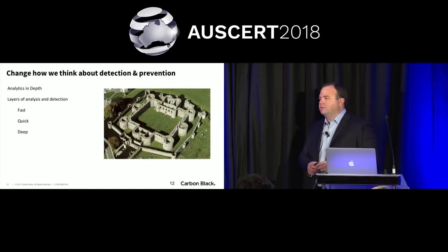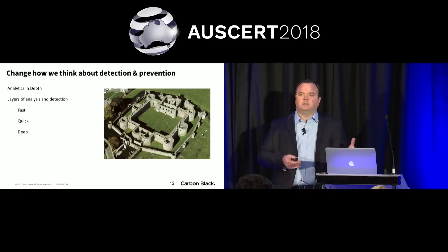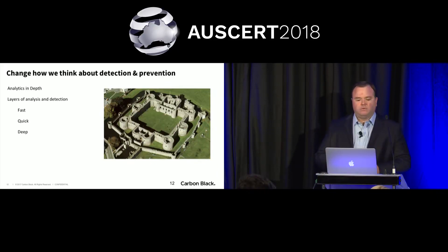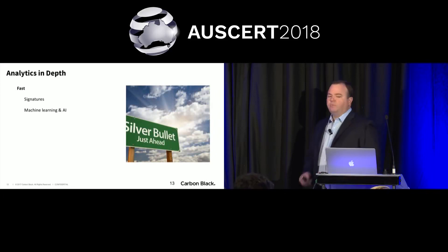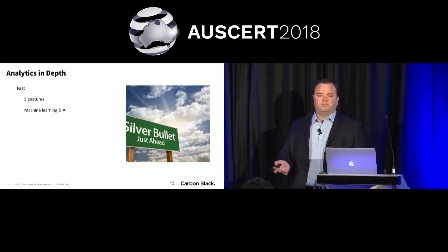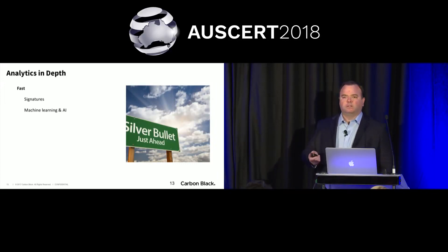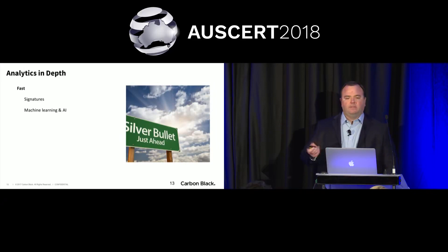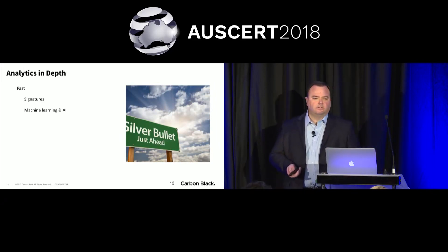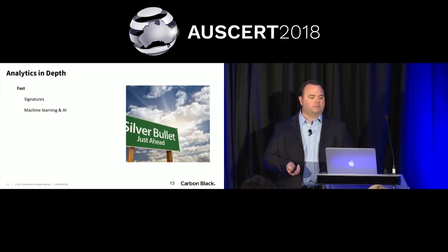When we start talking about fast analytics, these are things like signatures — IDS signatures, file signatures, signature-based AV — and basic binary classifiers where binary means zero or one, either good or bad. We can create classifications that evaluate in very quick time using machine learning and AI models that take a look at something and classify it good or bad instantaneously. Signatures are still out there. For a long time people say signatures are dead — I say they're not dead, I just think they are tired. They're still useful for contributing signal into an overall analytics infrastructure, so we keep them around.